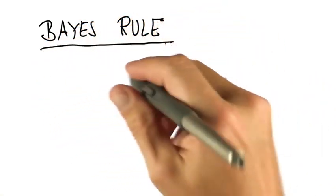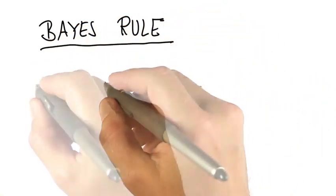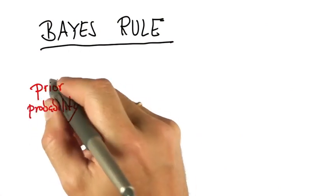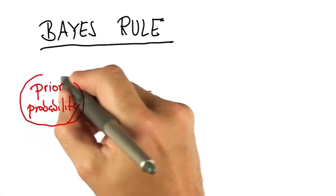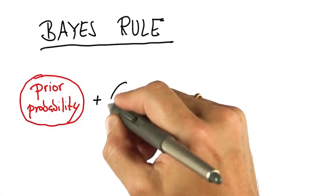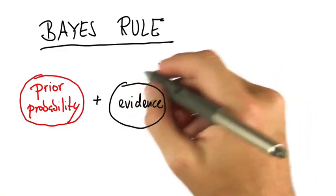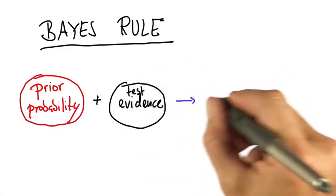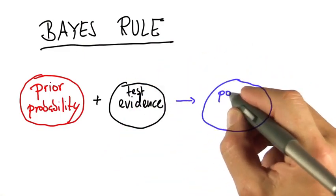So this is the essence of Bayes' rule, which I'll give to you in a second. There's some sort of a prior, by which we mean the probability before you run a test. And then you get some evidence from the test itself. And that all leads you to what's called a posterior probability.